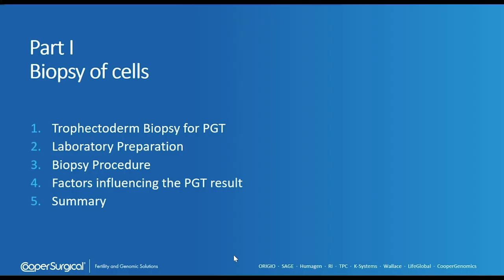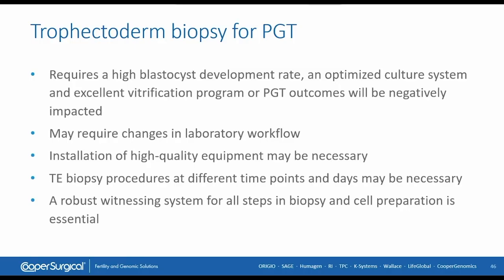To summarize: trophectoderm biopsy for PGT requires a high blastocyst development rate, an optimized culture system, and an excellent vitrification program. If your vitrification program is not at an excellent level, focus on that first — because if blastocysts do not survive vitrification, PGT will not improve outcomes. Make sure you have really solid IVF quality in your lab.